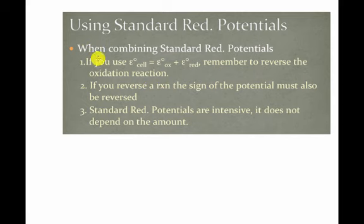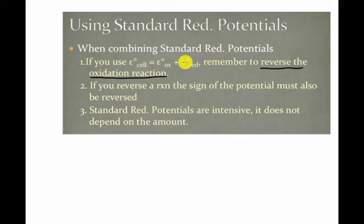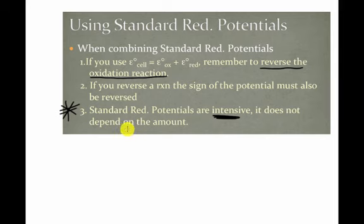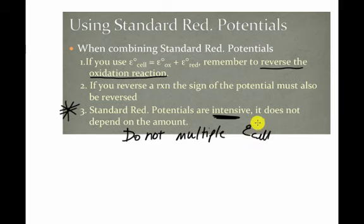Two things to remember when combining standard reduction potentials. First, if you reverse the reaction for oxidation, you must reverse the sign of the potential — the sign notation must be reversed. Second, standard reduction potentials are intensive. This is the one that everybody misses because in thermodynamics heat is extensive, but electrical energy is intensive because it's joules per coulomb. It doesn't depend on how much. So if you multiply the reaction, you do not multiply the voltage. If you double the reaction, you keep the voltage as is — do not multiply the cell potential when you make that change.